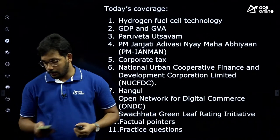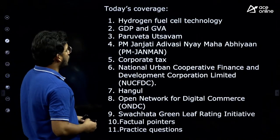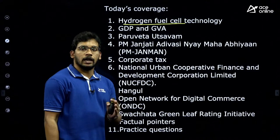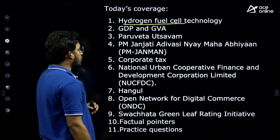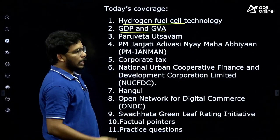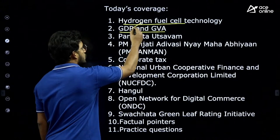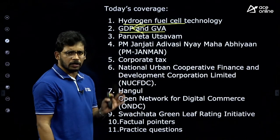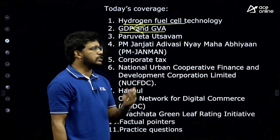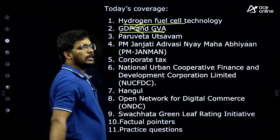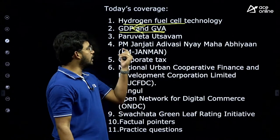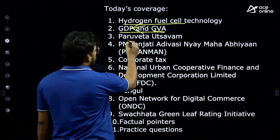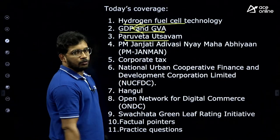Today the articles we are going to cover are: hydrogen fuel cell technology from science and technology — very important, we'll see how it works and exam-relevant facts. Then we'll see what is GDP and GVA, and the difference between GDP at factor cost, GDP at basic prices, and GDP at market price, as there is a lot of confusion among students about these three things.